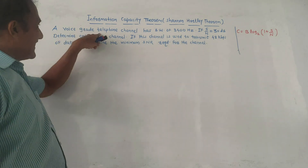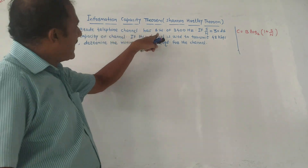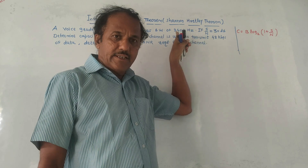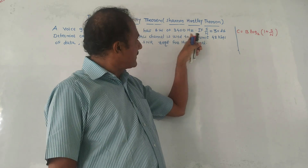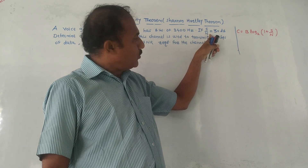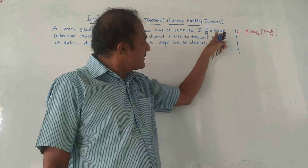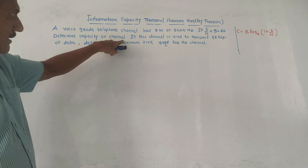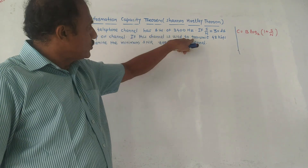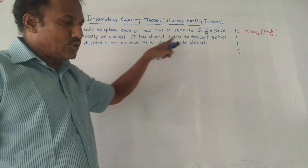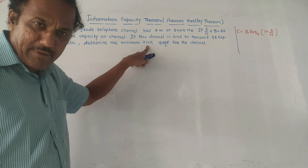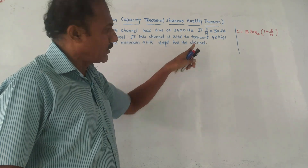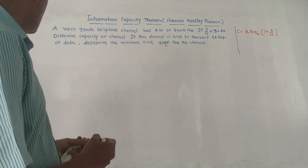Next problem: a voice-grade telephone channel has a bandwidth of 3400 Hz. The S/N ratio is given as 30 dB. Part one: determine the capacity of the channel. Part two: if this channel is used to transmit 48 kbps of data, determine the minimum SNR required for the same channel.